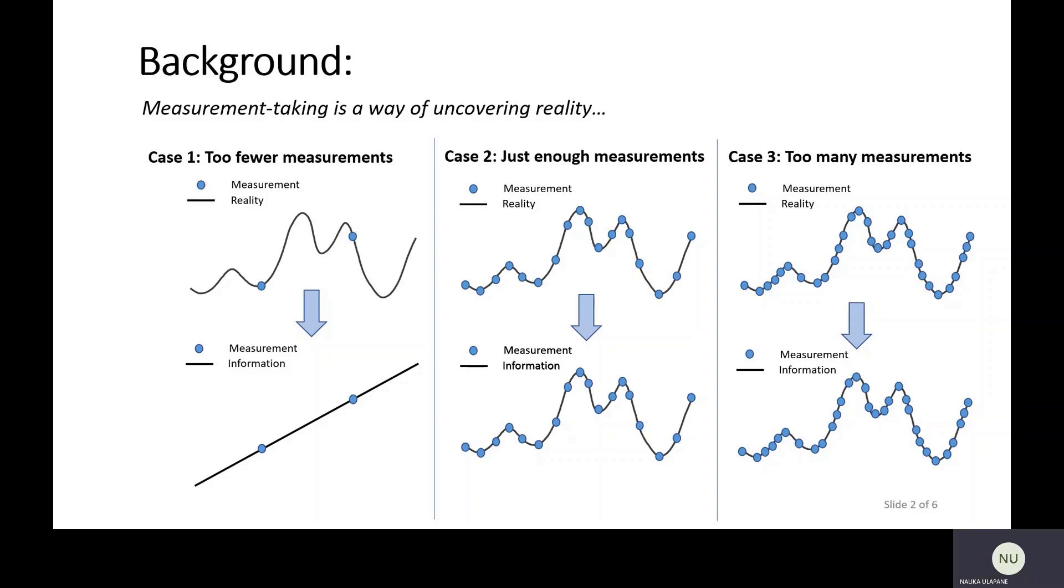And case three is you take too many measurements. When you take too many measurements, you might be spending a lot of time and a lot of resources. But in terms of new information, you will be adding very little to what you could have uncovered from case two. So that's the drawback or the downside of case three. When we do complex measurement taking tasks, it's extremely important for us to avoid case one, avoid case three, and try to reach case two or at least get as close as possible to case two.